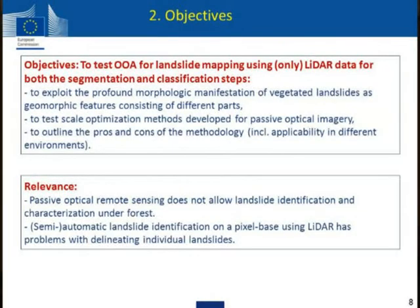Our objective is to test if OBIA can be used to map landslides using only LiDAR data for both the segmentation as well as the classification. We want to focus on extracting the morphological expressions of vegetated landslides, which can be very subtle, by trying to identify different parts and then growing landslides — starting with the scarp and growing them outwards. We also want to see if the plateau objective function optimization procedure that Marta developed can be applied to LiDAR data, and to assess the pros and cons. This is quite relevant because if you have vegetated landslides, optical data will just not get you very far, and pixel-based work has severe limitations.